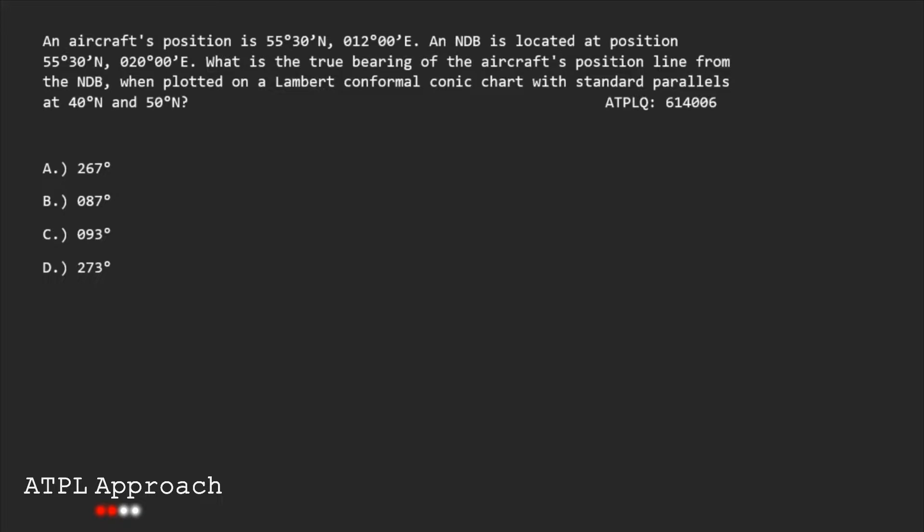Now let's answer a question using both methods and you can choose which approach you would want to take. I would recommend doing it the way that I do it now because you can make the most of my YouTube videos and that's how I believe most people do it. Here we have a question giving us the position of an aircraft and an NDB. We need to find the true bearing of the aircraft from the NDB when plotted on a Lambert's conformal conic chart with these standard parallels here.